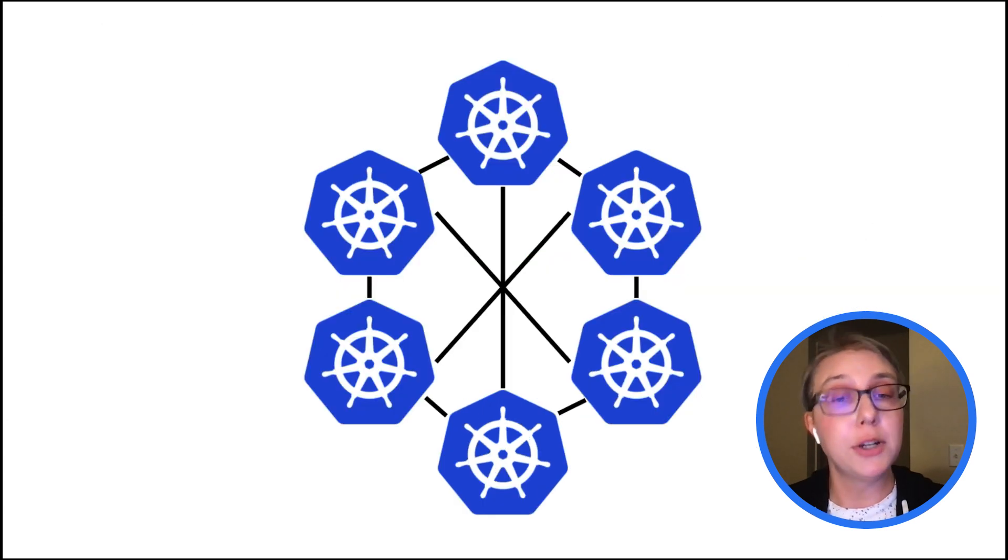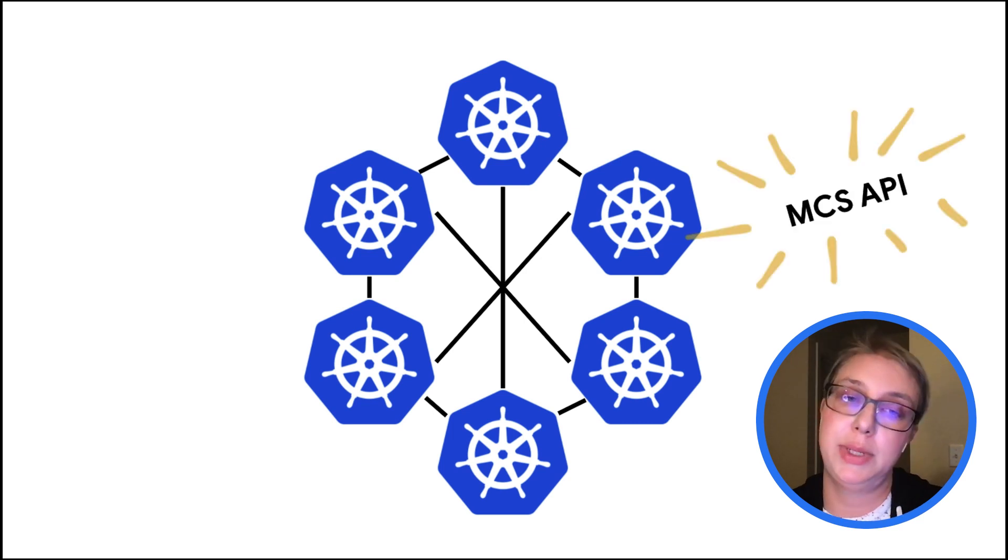To solve this in a first class way, we want the Kubernetes clusters to route those multi-cluster service requests to each other themselves, and we'd like to do this without any other third party or custom solution. So this is where the MCS API comes in. It's a standard championed by the upstream Kubernetes special interest group SIG multi-cluster as a Kubernetes native way to network multiple clusters together.